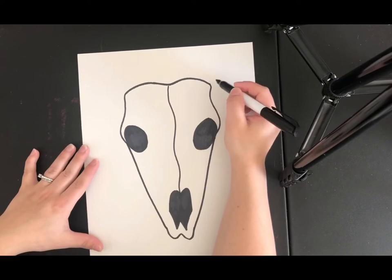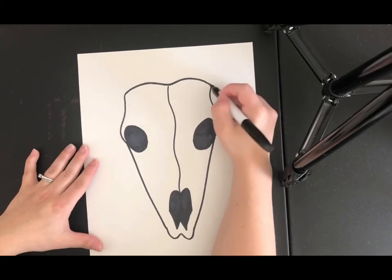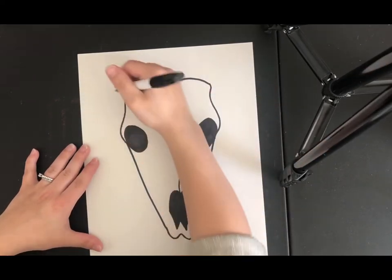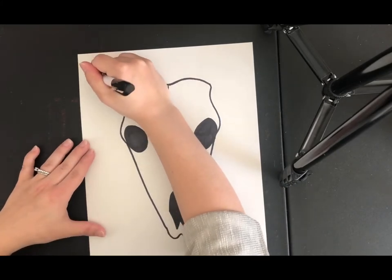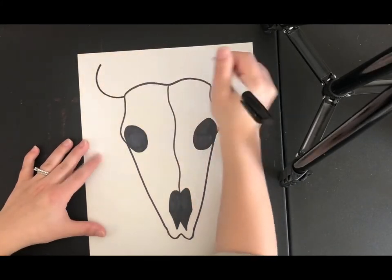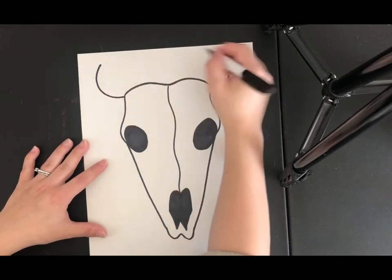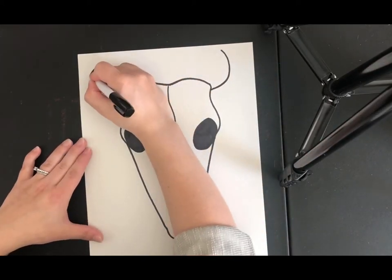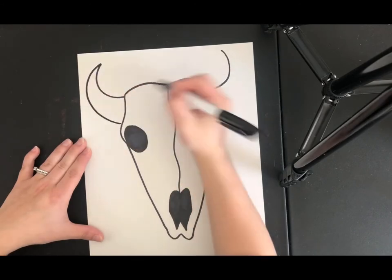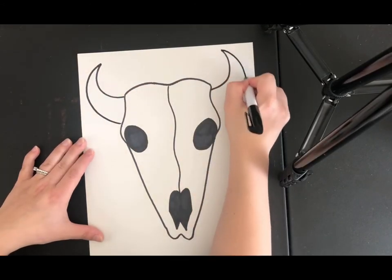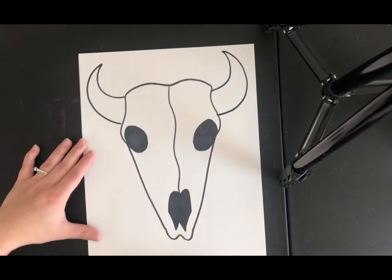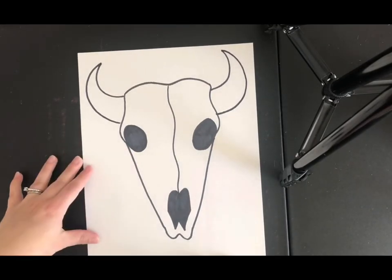So from here you can create your horns. You can curve them up, down, it's up to you. I'm going to go ahead and curve mine up. I'm going to use kind of like the letter C and then a backward C and then I'm going to bring that back and around almost like you're making a moon, like a crescent moon. And you can see I now have my cow skull's horns.